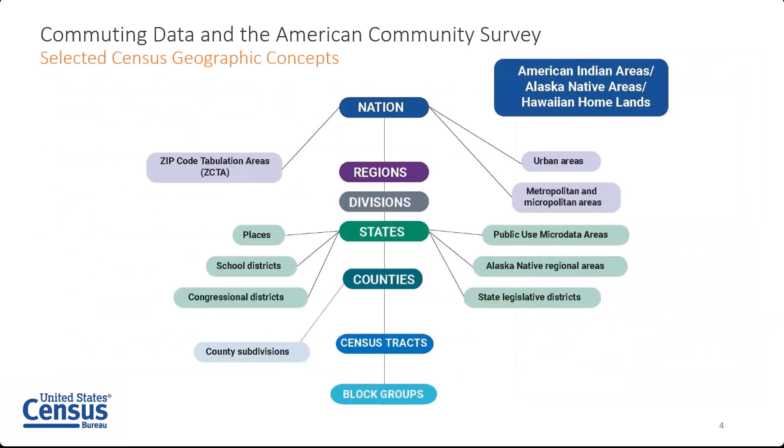Along with the numerous topics covered, the ACS also provides data for more geographies on an annual basis than any other household survey. The image on this slide shows some of the geographies for which ACS data are produced and the relationship between them. Lower geographic areas fit neatly within the larger areas directly connected with lines. For example, school, congressional, and state legislative districts fit neatly within states and do not cross state boundaries. However, they may cross boundaries of counties or metropolitan areas. The smallest geographic building block for the ACS is the block group. The ACS's unique ability to report on a wide range of geographies is what gives it such a broad appeal.